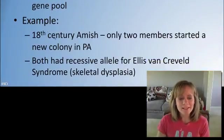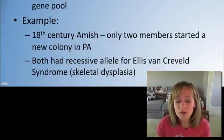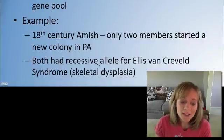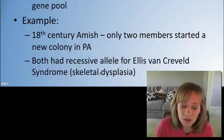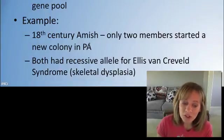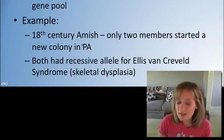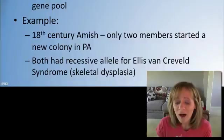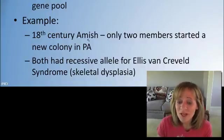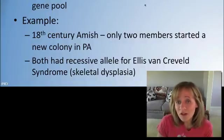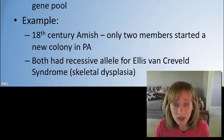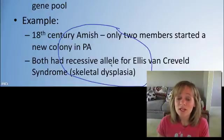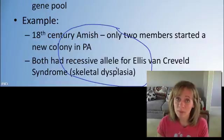A really good example of this, and a human example, is in the 18th century, the Amish, only two members started a new colony in Pennsylvania. And both of these founding members had the recessive allele for this syndrome, which causes skeletal dysplasia. And now, when we look at this Amish population of Pennsylvania, I'm not sure of the exact numbers, but the percentage or the prevalence of this allele is just outstanding because of those two original founding members. Now, they didn't represent the original colony. I'm sure their original colony did not have a lot of those recessive alleles, but because of the founder effect, this population in Pennsylvania has now evolved to have this recessive allele become very prevalent.